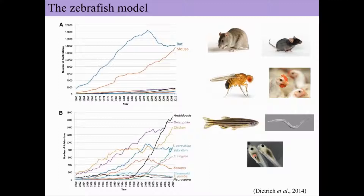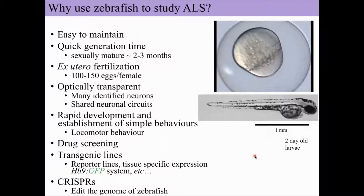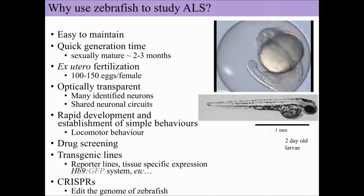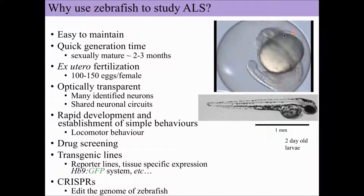So why zebrafish? They're easy to maintain. They have a quick generational time, reaching sexual maturity in about two or three months. The females have ex-utero fertilization — they lay their eggs and they develop rapidly. This is a short video showing an egg just born in the morning at the one-cell stage, and it rapidly divides. By the first day, you have an eye forming and the spinal cord. You get these spontaneous contractions, and at two days the animal hatches. After hatching, it has basically laid down a spinal cord and can swim away. The circuitry of the spinal cord is shared quite well amongst vertebrates in an evolutionary sense.